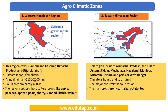The second zone is the Eastern Himalayan Region. It consists of the entire Northeast plus Sikkim and parts of West Bengal — all seven sister states are part of this region. The climate is humid and sub-humid. The main constraint is soil erosion due to abundant rainfall throughout the year. Major crops grown are rice, maize, potato and tea. Assamese tea is famously known worldwide, and rice is the staple food of this region.